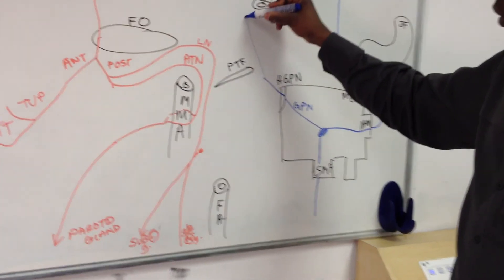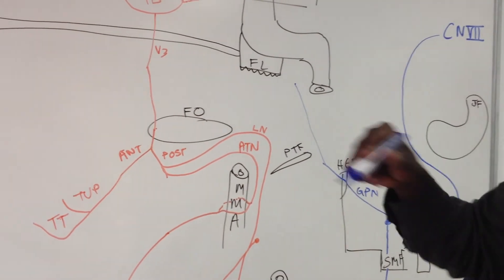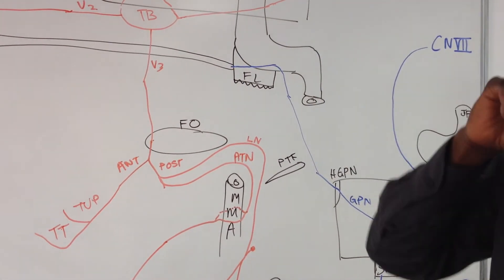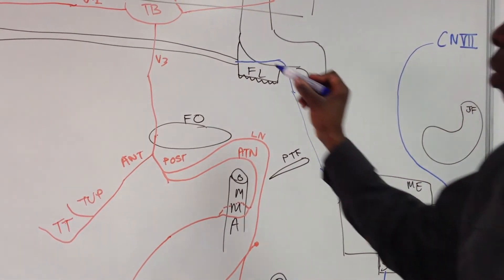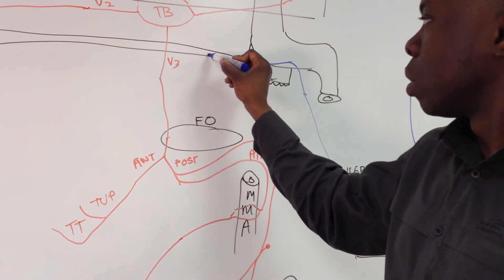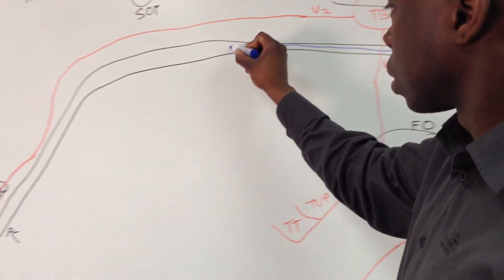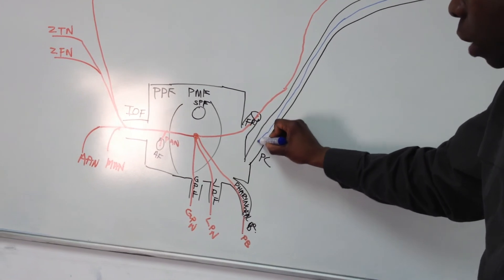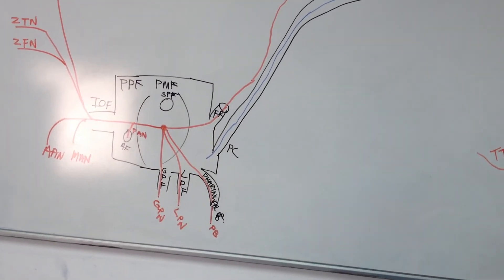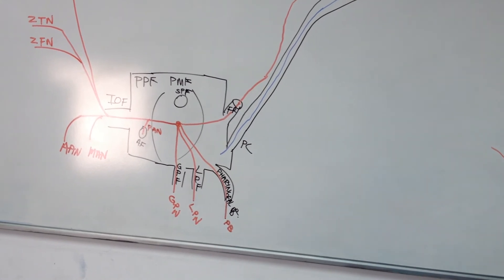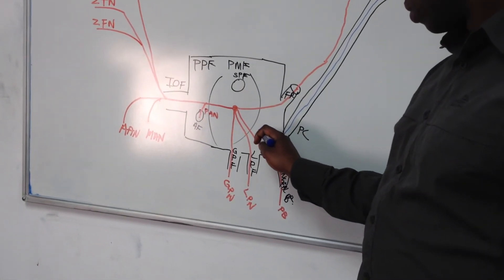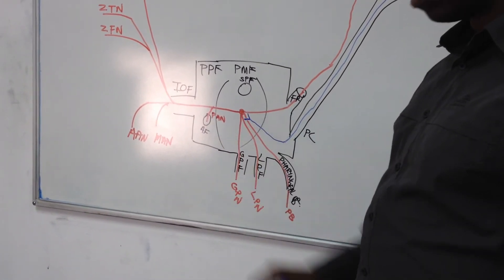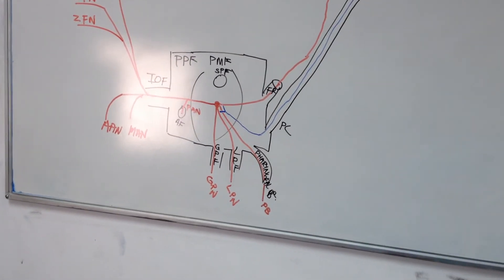From foramen lacerum the greater petrosal nerve finds its way into the pterygoid canal and walks all the way down the pterygoid canal, down, down to the pterygopalatine fossa. When it gets there it comes in and terminates there.